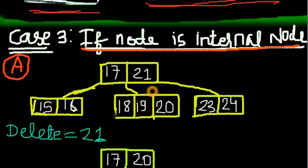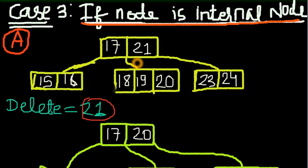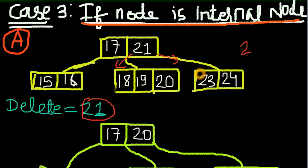If the node is an internal node, what are the cases? First, if we have to delete 21: go to the left, go to the right. On the left we have 18, 19, and 20 — less than 21. On the right we have 23 and 24 — greater than 21. Check the left side: do you have keys greater than the minimum of two? It says no, I only have two keys. Go to the left: do you have keys greater than two? Yes, I have one, two, three.